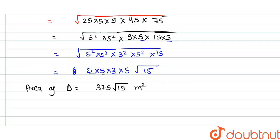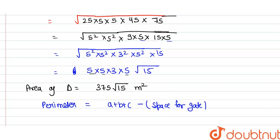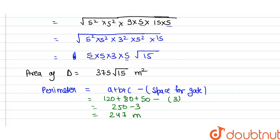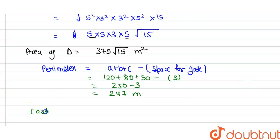Now we have to fence the garden. To find the fencing cost, first find the perimeter. Perimeter equals a + b + c minus the space for the gate. That is 120 + 80 + 50 − 3 = 250 − 3 = 247 meters.